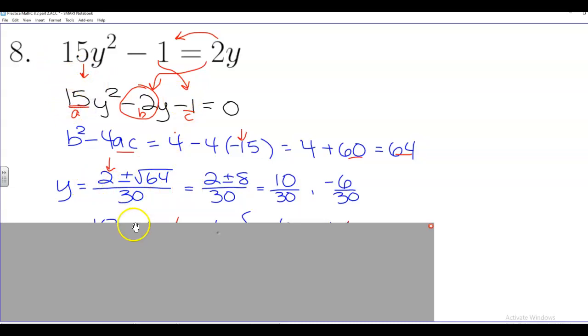Well, a is 15, so 2 times 15 is 30. And the square root of 64 is 8. So we have in the numerator 2 plus or minus 8, all divided by 30.